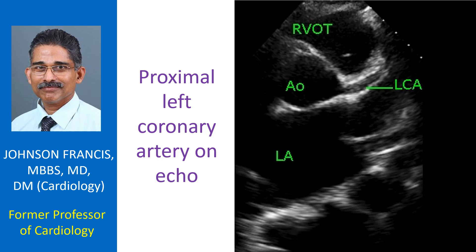Proximal portions of major coronary arteries can often be seen on echocardiography, while the distal regions can seldom be imaged. Coronary arteries are better seen if they are dilated, especially in those with aneurysms in Kawasaki disease.